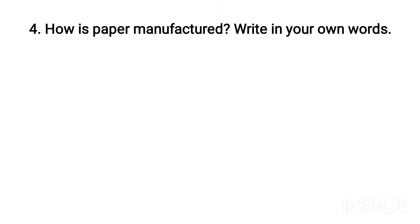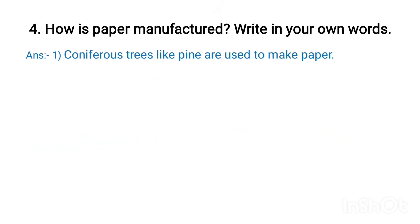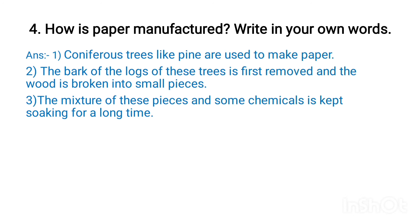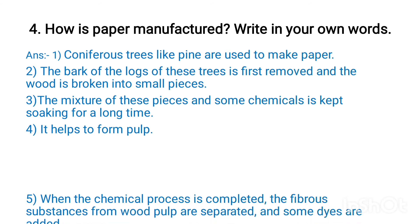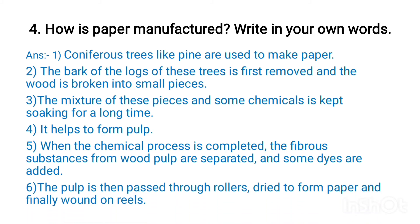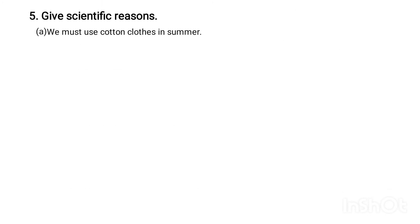Answer: Forest trees like pine are used to make paper. The bark of the logs of these trees is first removed and the wood is broken into small pieces. The mixture of these pieces and some chemicals is kept soaking for a long time to form pulp. When the chemical process is completed, the fiber substance from the wood pulp is separated and some dyes are added. The pulp is then passed through rollers to form paper and finally wound on reels.